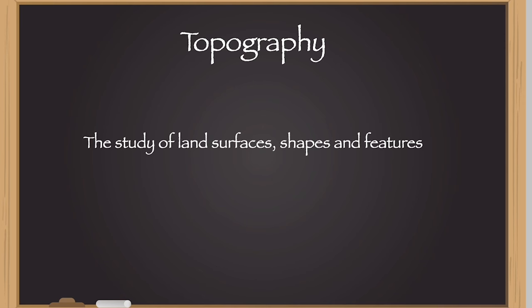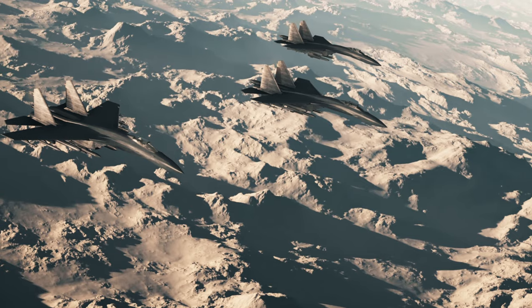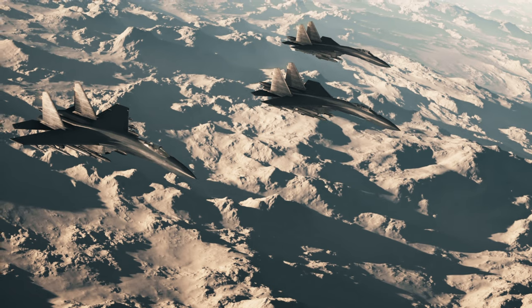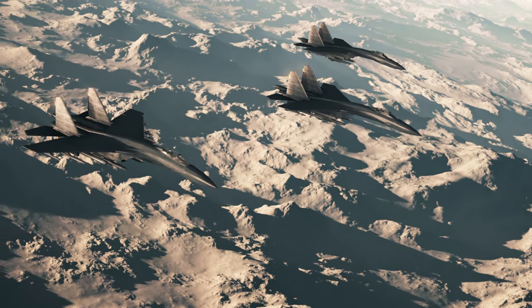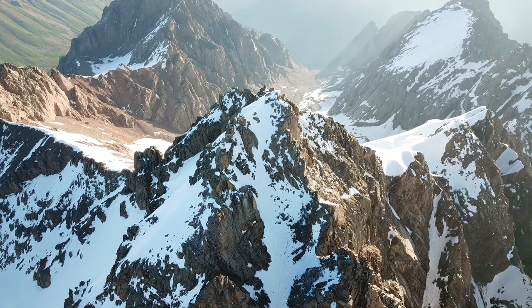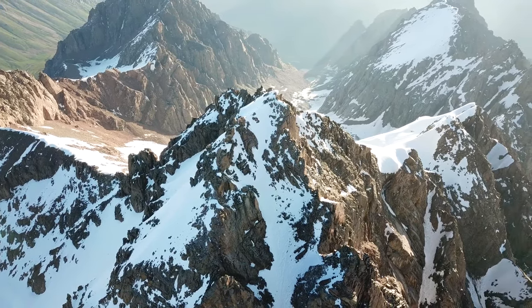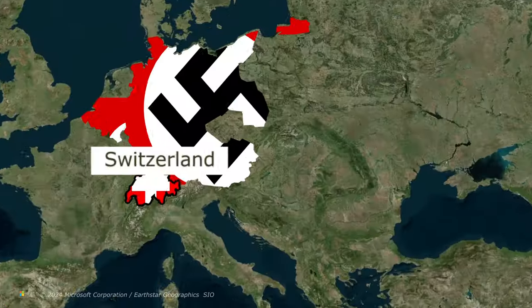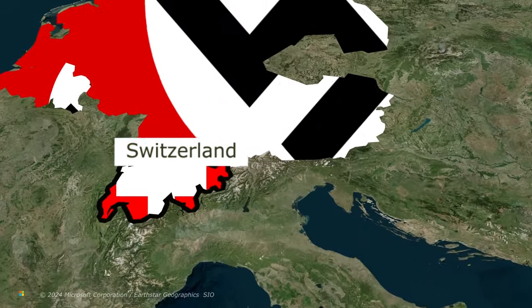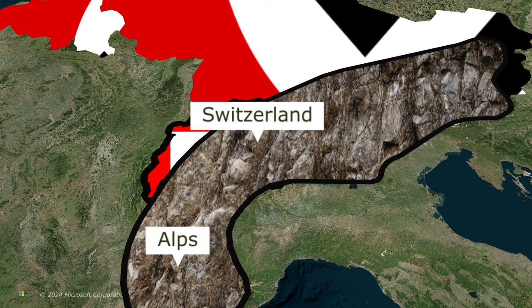Topography — the study of land surface shapes and features — plays a crucial role in strategic defense and territorial integrity. The presence of natural barriers like mountains can significantly enhance a country's ability to protect itself against invasions. A historical instance illustrating this is during World War II, where the formidable Alps acted as a natural fortress, preventing the German forces from invading Switzerland.